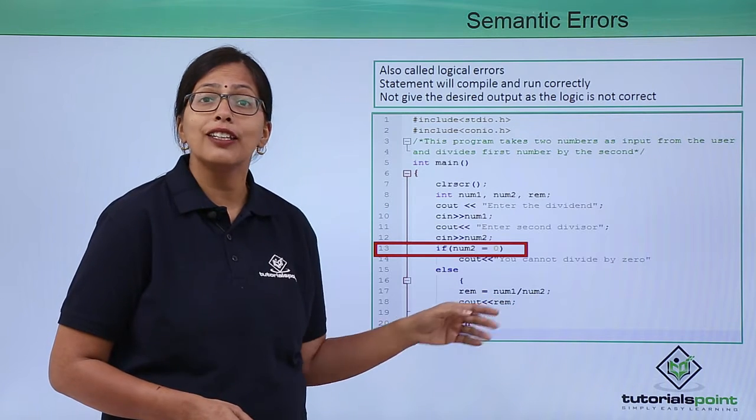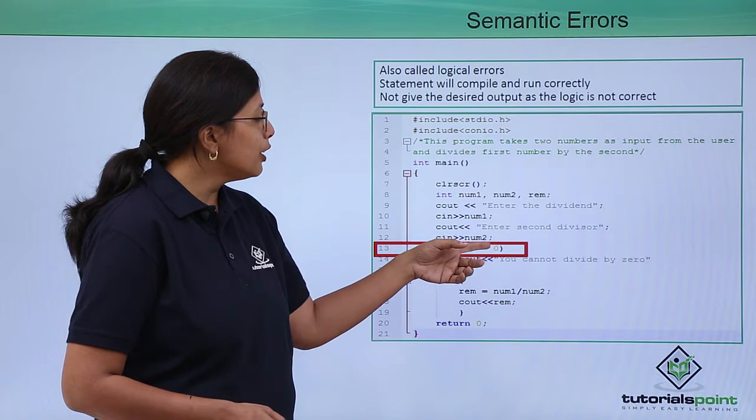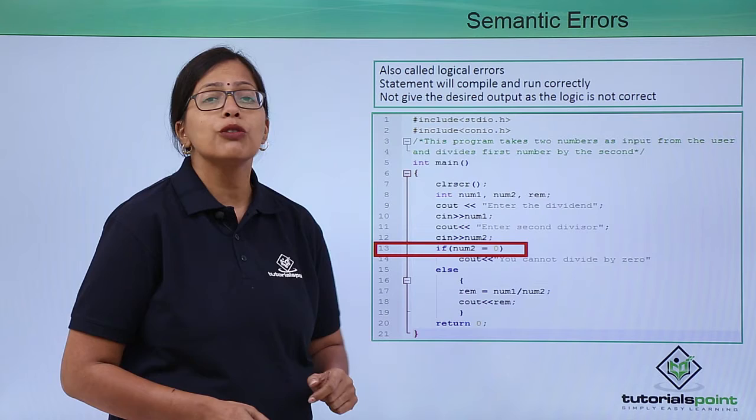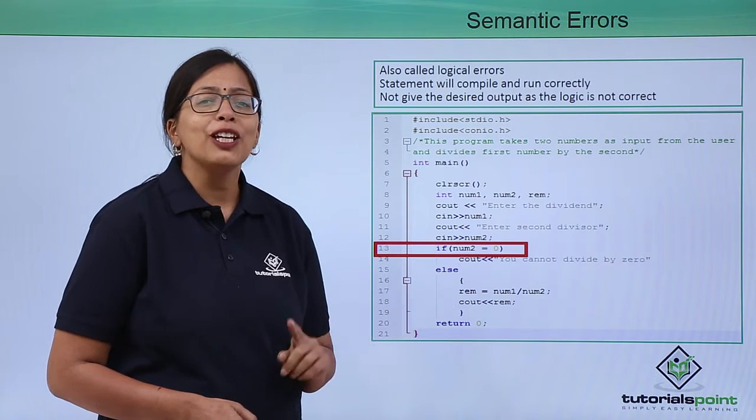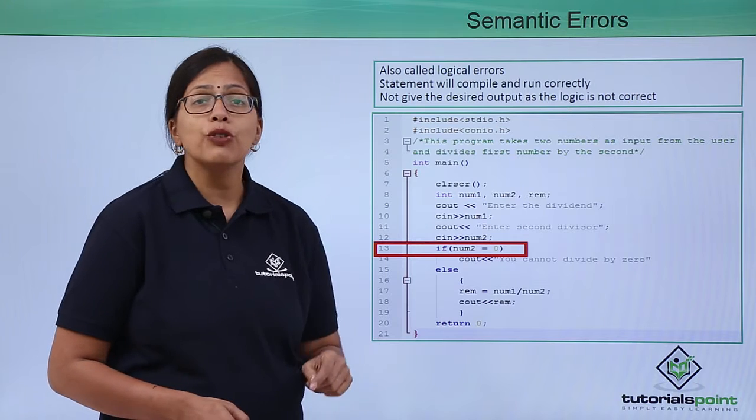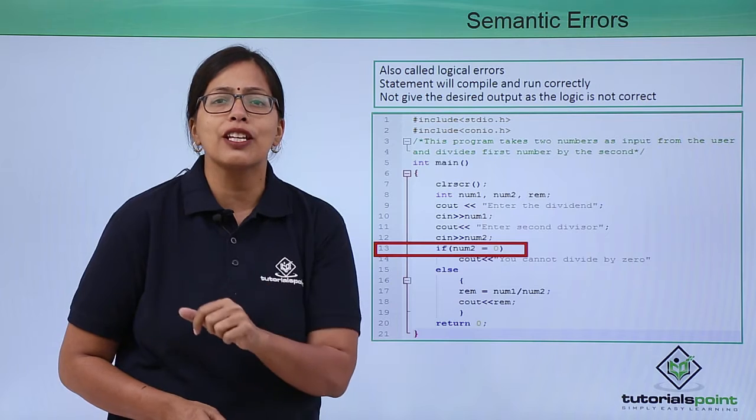What is that error? Here the programmer wants to compare the value of num2 to zero, but actually by mistake what has been done is he has written num2 is equal to zero. What does that do? When in math you write 'a is equal to 6', the value of a becomes 6. Here the programmer has written num2 is equal to zero, so num2 will become zero.